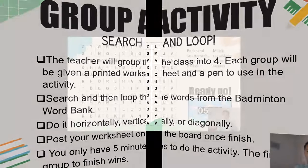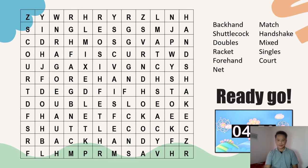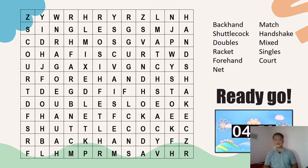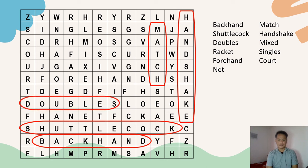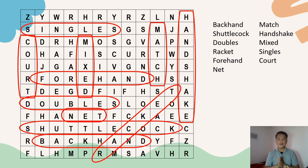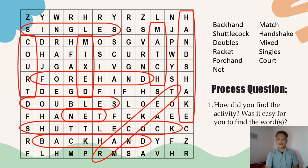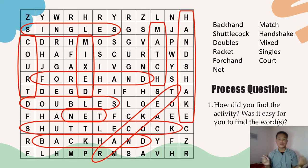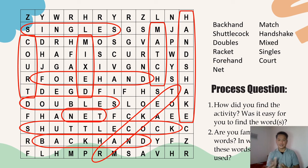Are you ready? The words in the word bank include: backhand, match, shadow clock, handshake, doubles, mixed, racket, singles, forehand, court, and net. Did you find all the correct words? How did you find the activity? Was it easy for you to find the words? Are you familiar with those words, and in what particular sport are these words used? Can these words belong to badminton?